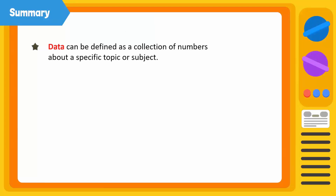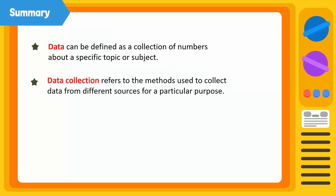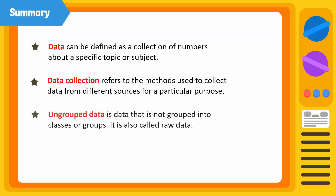Let's summarize. Data can be defined as a collection of numbers about a specific topic or subject. Data collection refers to the methods used to collect data from different sources for a particular purpose. Ungrouped data is data that is not grouped into classes or groups — it is also called raw data.